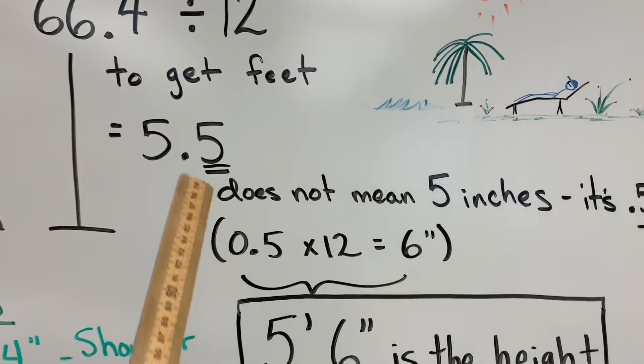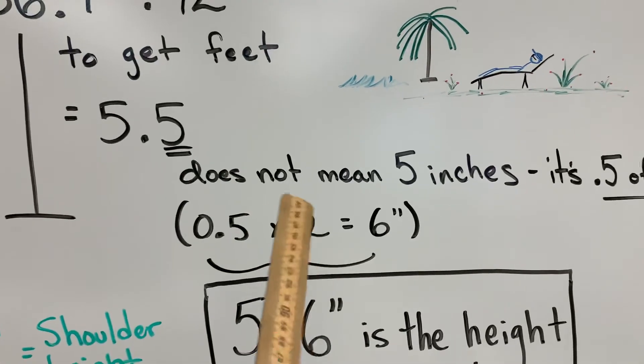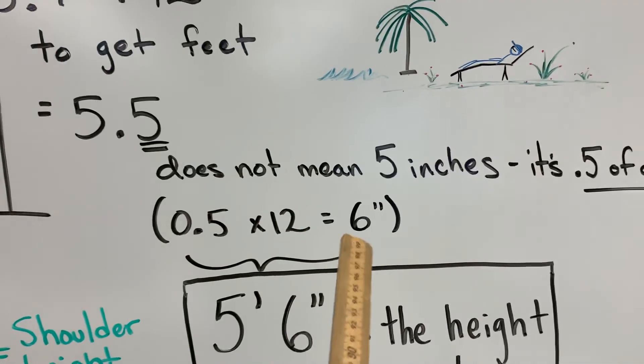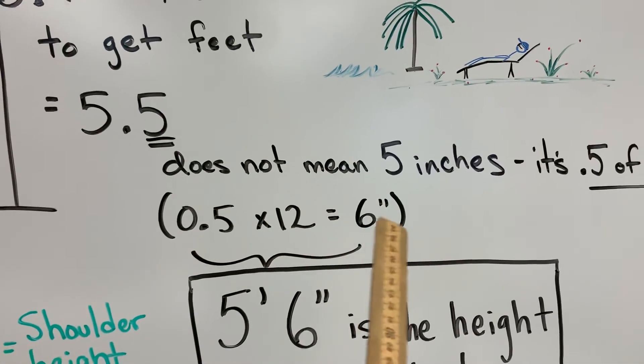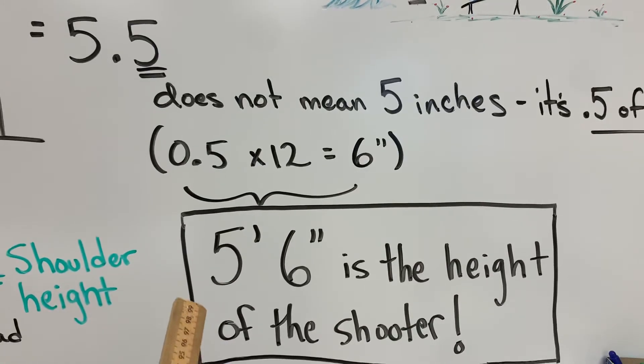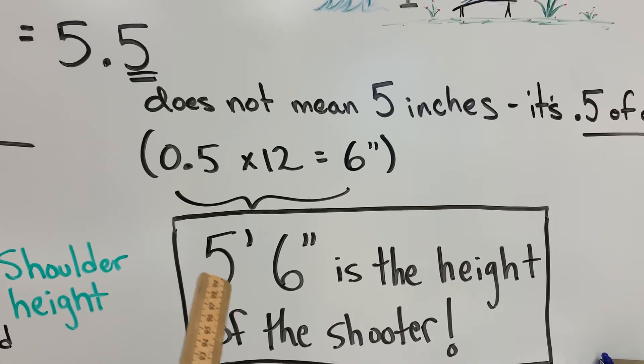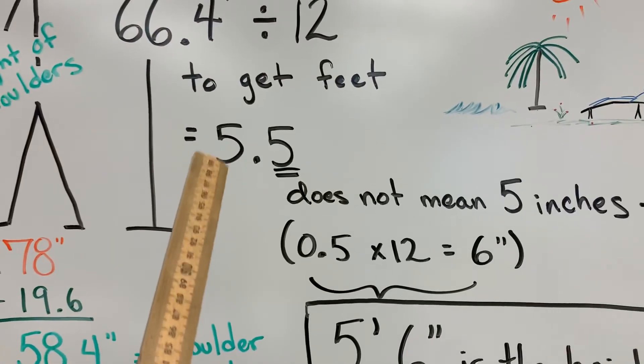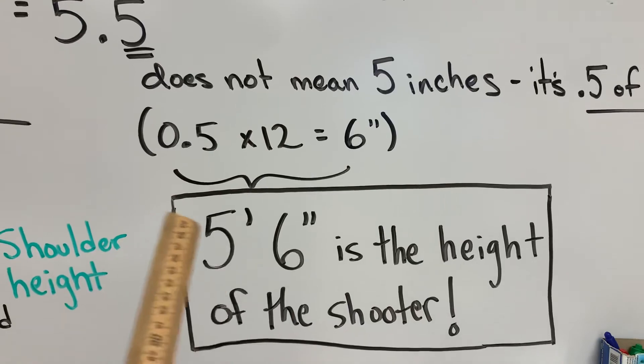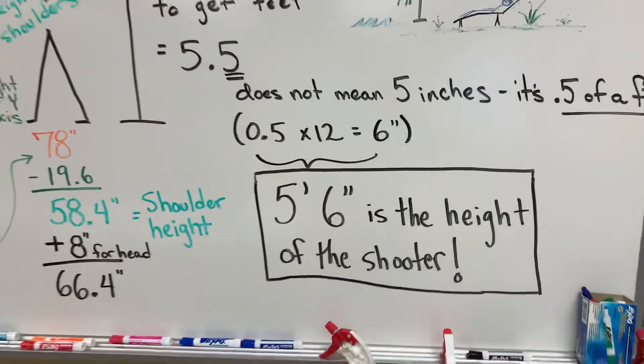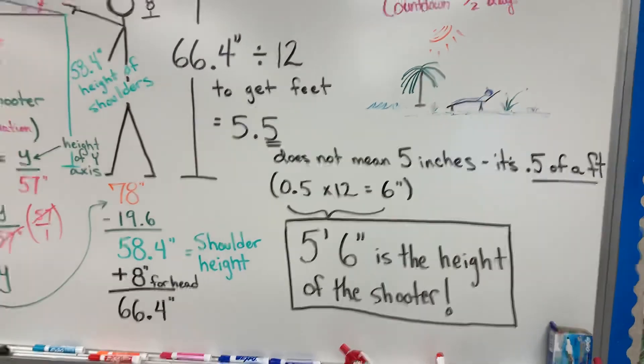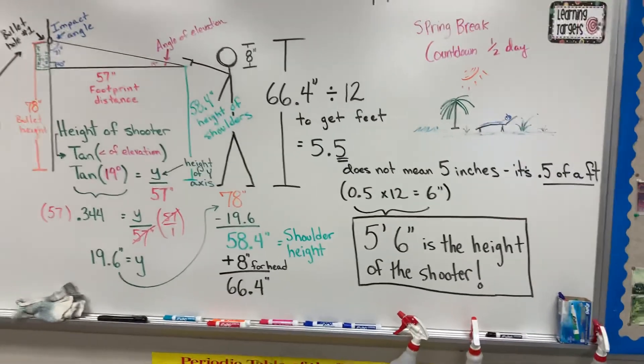So I'm going to multiply 0.5, or whatever decimal you get for the other ones here. If this was 0.3, you would multiply 12 by 0.5 in this case, or 0.3, or whatever you get to figure out how many inches you have to add to that five feet. Well, in this case, it's five feet, and then I'm going to add that six inches. So we are able to figure out five foot, six inches is the height of our shooter with this information here.